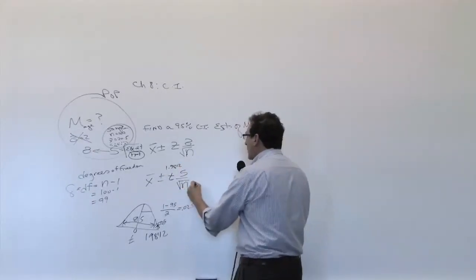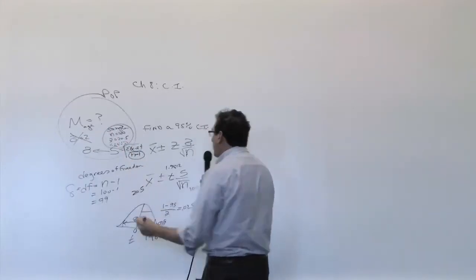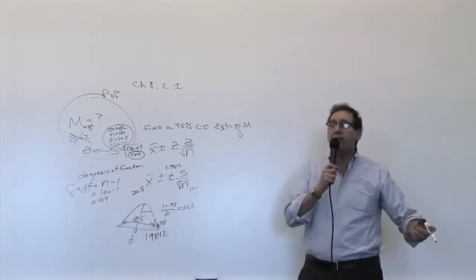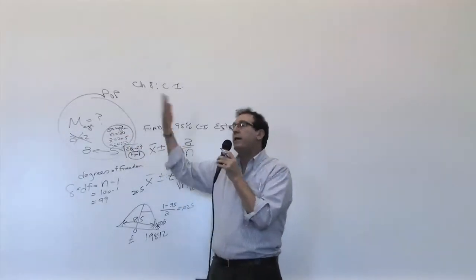What is the S? This is 100. The X-bar we said was 20.5. Now what is the S? Well, since I didn't give you the original numbers that make up the sample, you can't calculate the S, so we're going to have to make it up.